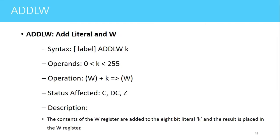The first instruction is ADDLW. The meaning of this instruction is to add the literal and the value present in the working register. A literal is nothing but the immediate data present in the instruction. The syntax of this instruction is ADDLW K, where K is an 8-bit value. K can take any decimal value between 0 to 255, with a maximum hex value of FF and minimum of 00. This value will be added with the contents of the working register and the result will be stored in the working register.